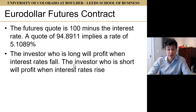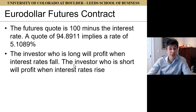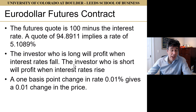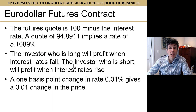The investor who is long makes money when the price of the futures goes up. The price of the futures goes up when interest rates fall. The investor who is short makes money when the price of the futures goes down. The price of the futures goes down when interest rates go up. A one basis point change in rate — 0.01% — gives a 0.01 decimal change in price. This is fairly natural, as pretty much all interest rate futures behave this way: when rates go up, prices go down, and vice versa. This is designed to be a little bit like a bond — when rates go up, bond prices go down. Eurodollar futures contracts are designed to work in the same way.